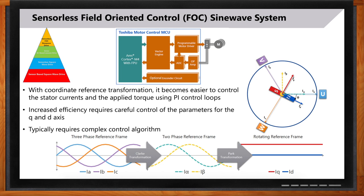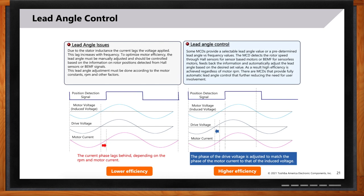One advanced challenge is lead angle control. Due to the inductive nature of motor windings, the phase current will lag the voltage — this factor becomes more important in high-speed, high-efficiency applications and leads to the concept of lead angle control and compensation. For highest efficiency, we want the motor current to line up with when the rotor is passing the stator — aligned with the induced back EMF. Since it's the timing of the drive voltage, not current, that is controlled, the current will lag the ideal timing. To compensate and improve efficiency, we adjust the drive voltage to lead the back EMF so that the motor current is aligned — this is done through lead angle control.